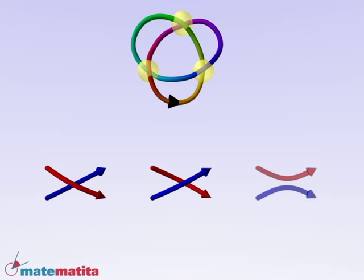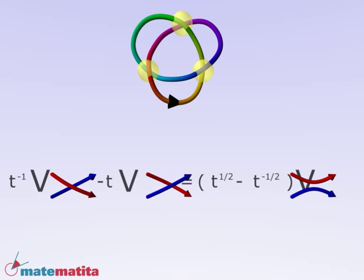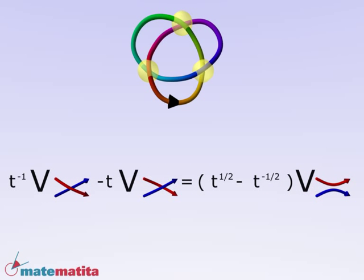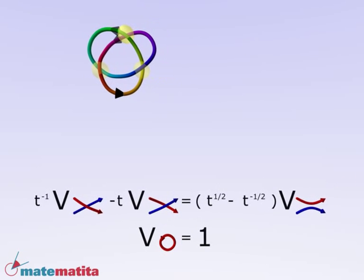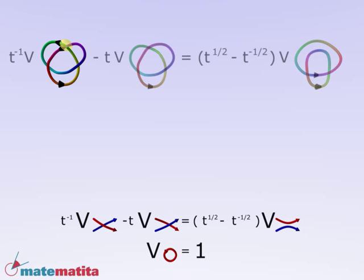Resolving a crossing means to break the arcs and connect them in the other way, respecting their orientation. Introduce a relation between these pieces. The symbol V indicates the Jones polynomial. Now, associate the polynomial 1 to the unknot. Using just these two relations, we can calculate the polynomial on every knot.